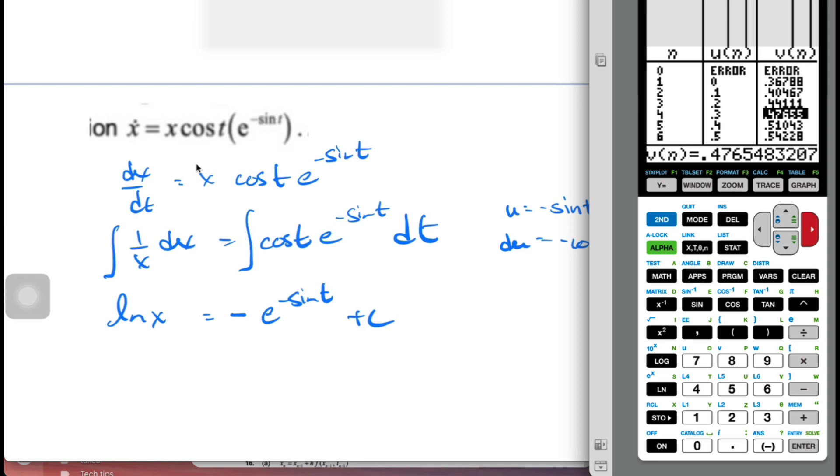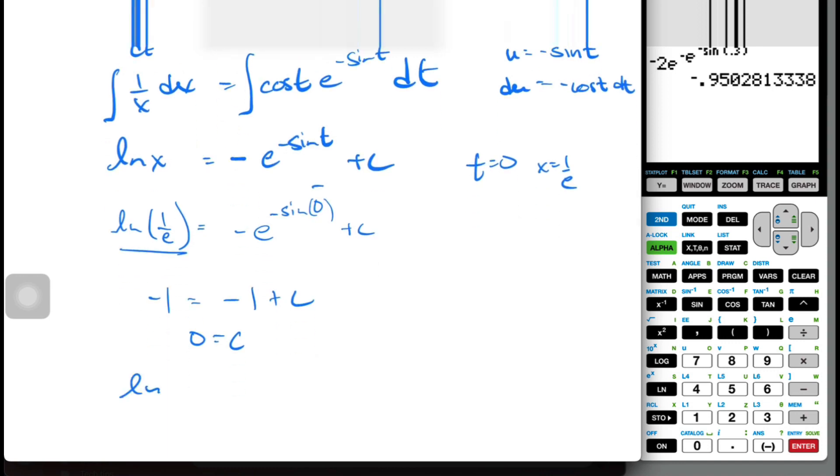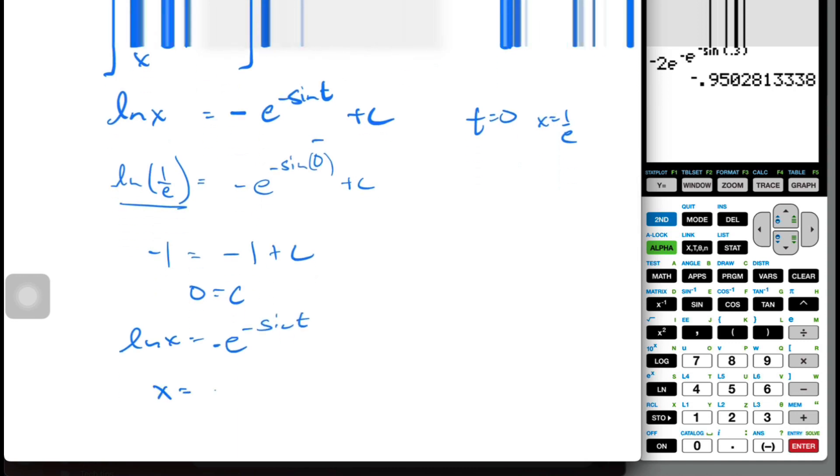And I'm solving for, so from here I'm actually going to substitute in this value. So if ln 1 over e equals negative e to the minus sine t plus c, well this thing here is equal to negative 1, and this one here is equal to negative 1 plus c. So c equals 0, and so then I can say ln x is equal to negative e to the negative sine t. X is equal to e to the negative e to the negative sine t.